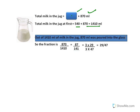Since this rectangular unit was equal to 540 ml, the total milk in the jug becomes equal to 1410 ml. Now, out of 1410 ml of milk that was there in the jug, 870 ml was poured into the glass.